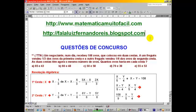Um negociante, num dia, recebeu 108 ovos, que colocou em duas cestas. A um freguês vendeu um terço dos ovos da primeira cesta, e a outro freguês vendeu um sexto dos ovos da segunda cesta. As duas cestas têm agora o mesmo número de ovos. Quantos ovos havia em cada cesta?